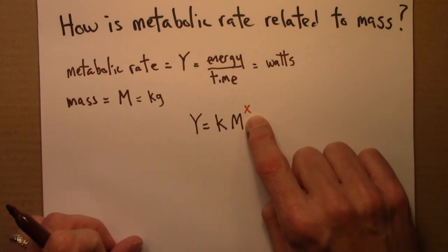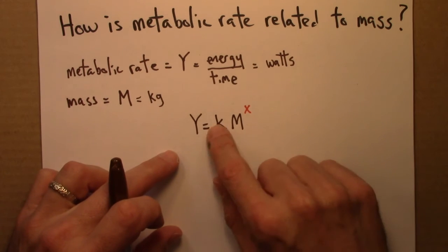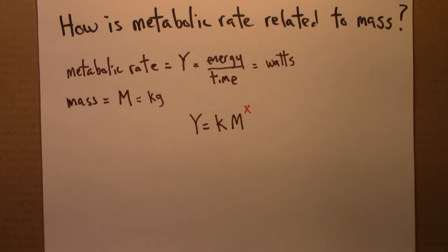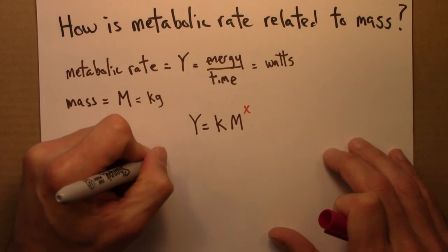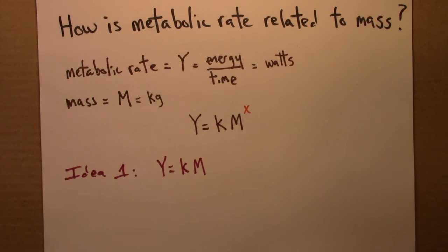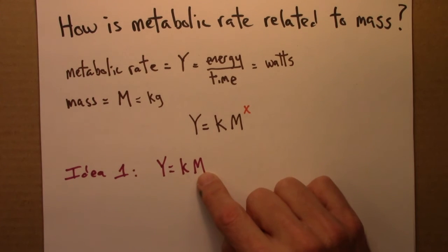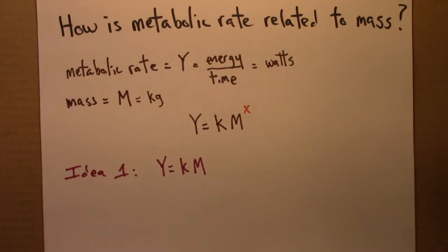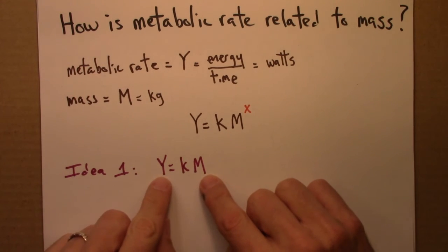Let me first present a couple of reasonably logical ways of thinking about this that would lead to a candidate exponent, but they turn out to be wrong. The first idea is just that Y and M are proportional — that Y scales as M to the first power. This idea is appealing and certainly makes sense: if you're more massive, you definitely need to eat more food to stay alive. The more massive you are, the more cells you have, and cells need oxygen and food to survive.